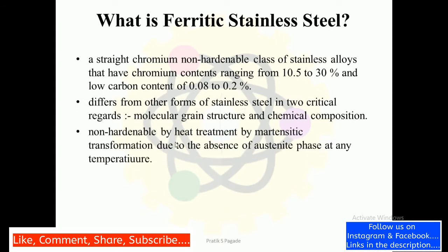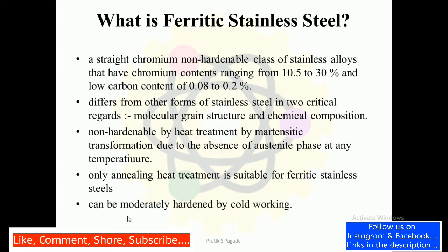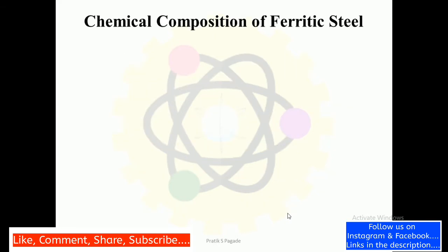Third, non-hardenable. It is non-hardenable by heat treatment by martensitic transformation due to the absence of austenite phase at any temperature. Only annealing heat treatment is suitable for ferritic stainless steels, and it can be moderately hardened by cold working.